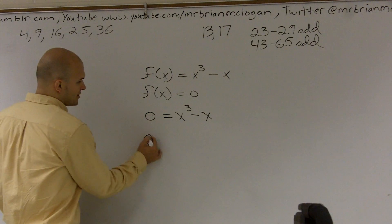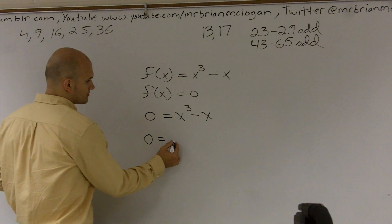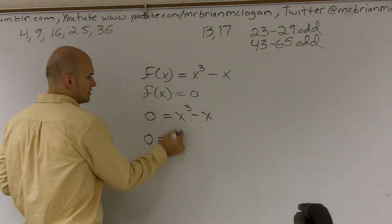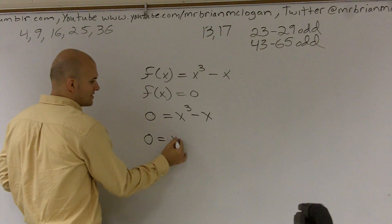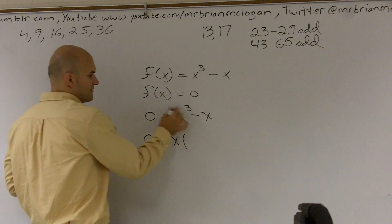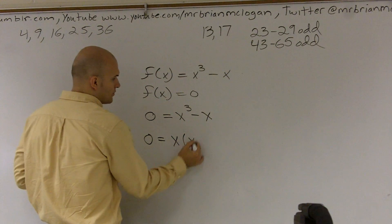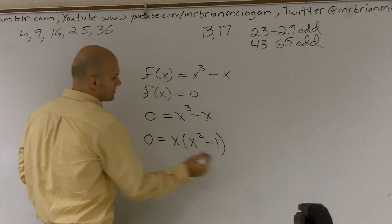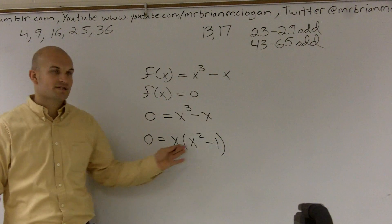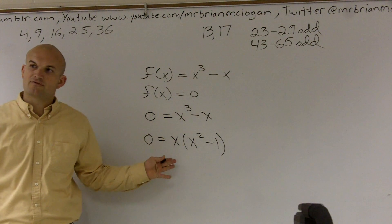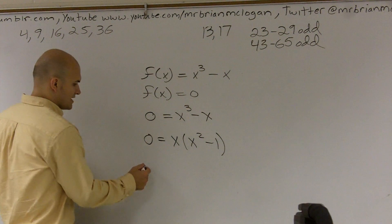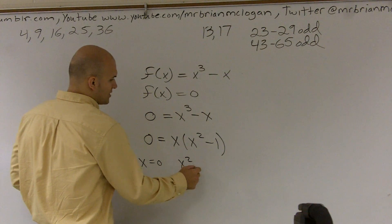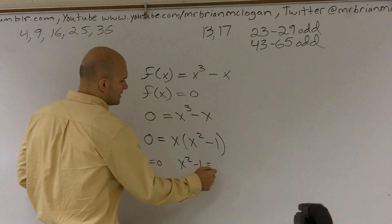So I'll say 0 equals, and I see what I can factor out. I can factor out an x, and when I factor out an x, I'm left with x squared minus 1. Since I have this as a set of linear factors, I can separate this: x equals 0 and x squared minus 1 equals 0.